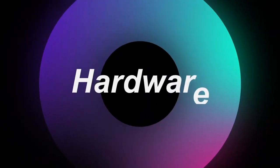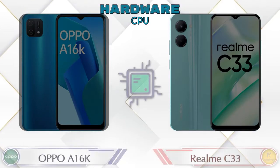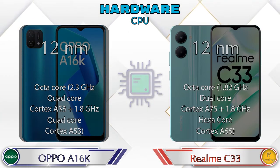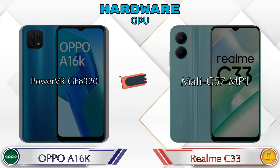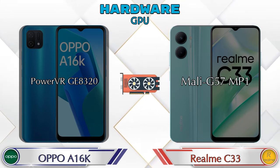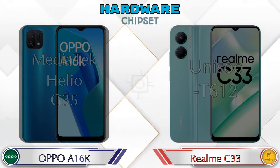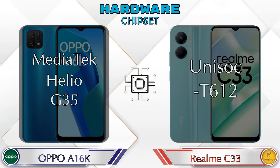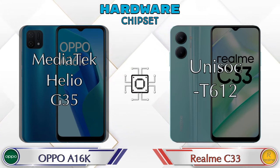First we talk about the most important part of the phone: hardware. Let's see the details about the CPU. Talking about GPU, the PowerVR GE8320 is available in the A16k and Mali-G57 MP1 is available in the Realme C33. Talking about chipset, the A16k has the MediaTek Helio G35 and the Realme C33 has the Unisoc T612.